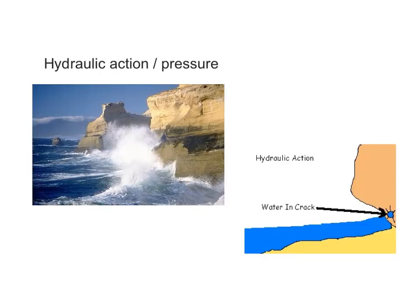The first process is hydraulic action or pressure or power. This is the sheer force of the waves as they crash against the cliff face. The water enters the natural cracks and crevices in the cliffs, forcing air into them. The air forced into these cracks widens them further. This increase in air pressure is called cavitation, and it causes a weakening in the cliff which will eventually cause it to collapse.